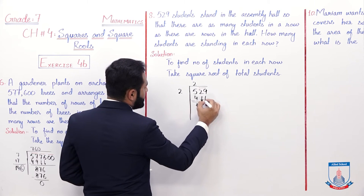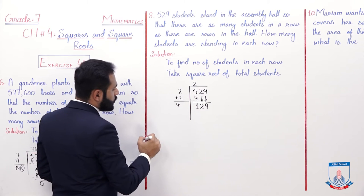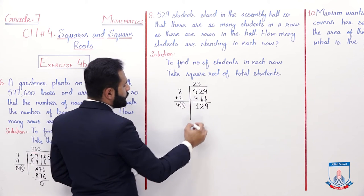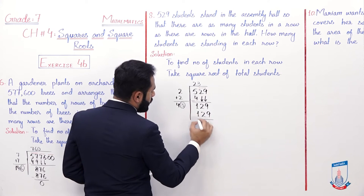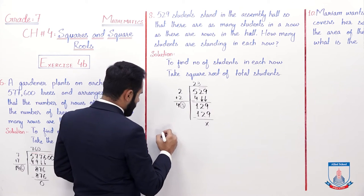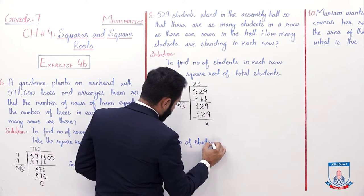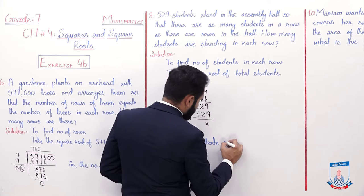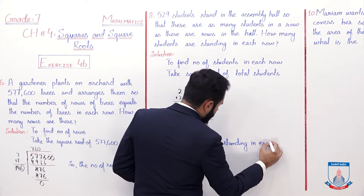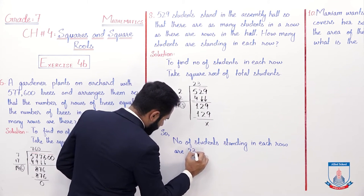Bring down the next pair: 1 and 29 gives 129. We need a digit such that 4 doubled is 4, giving 43 into 3 equals 129. So 43 times 3 equals 129. The number of students standing in each row is 23.